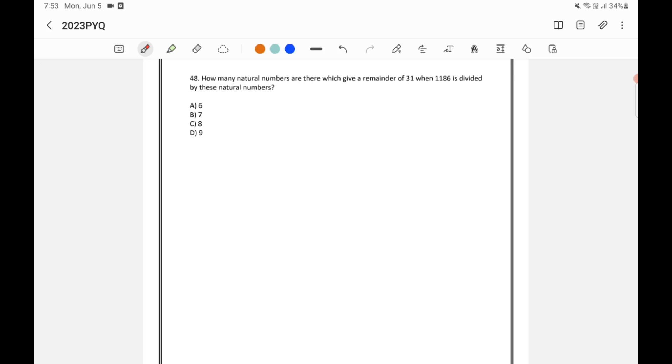How many natural numbers are there which give a remainder 31 when 1186 is divided by this natural number? So when 1186 is divided by a natural number x we are getting remainder as 31.